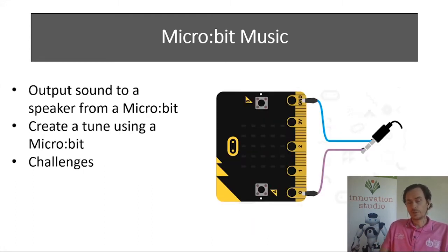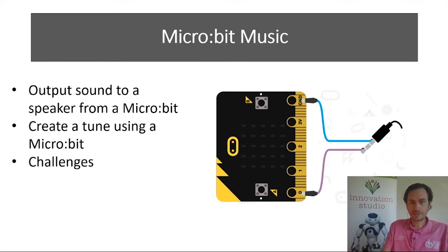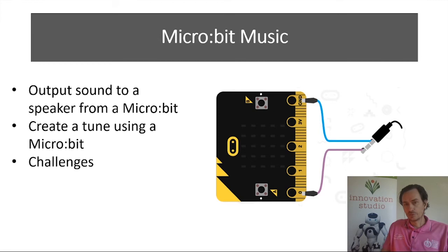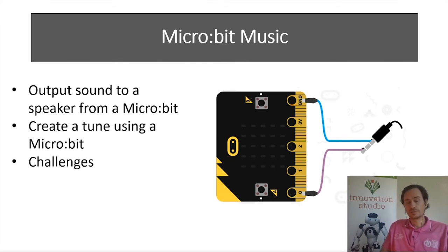With the microbit, if you had a set of headphones you could wire it up like this image here. But we're just going to be using the device that you're doing this on through the virtual environment — it'll just play through those speakers. What we're going to do is start out and do some basic output to a speaker using the microbit. We might use some of the sensors on the microbit to emit different sounds and different tones, and then after that we're going to create a tune.